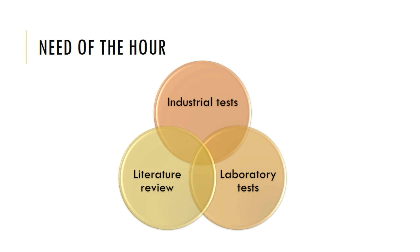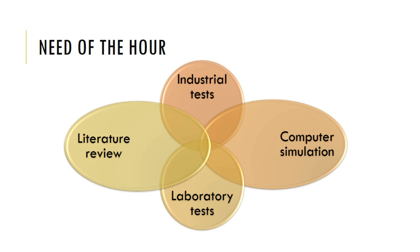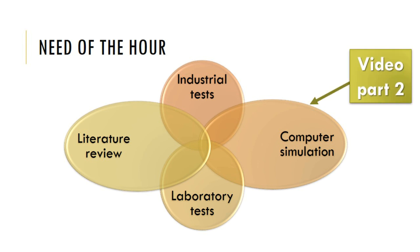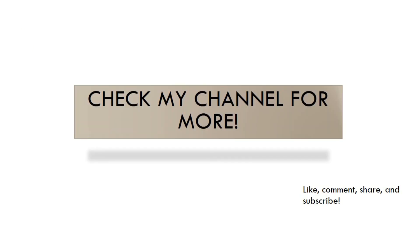If we are able to combine the conditions in these two tests, we would get a more realistic picture of how corrosion will happen and how the corrosion inhibitor will actually work in industry. Hence the intersection point is the most important part that should be focused upon by both communities. There is a fourth component not yet used quite often — computer simulation — which I will discuss in part two of this video. Please check out my channel for more. Like, comment, share, and subscribe. See you next time.